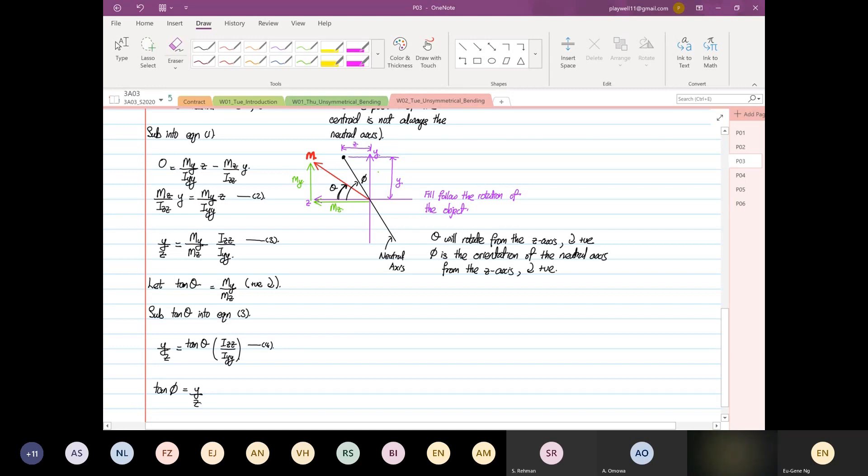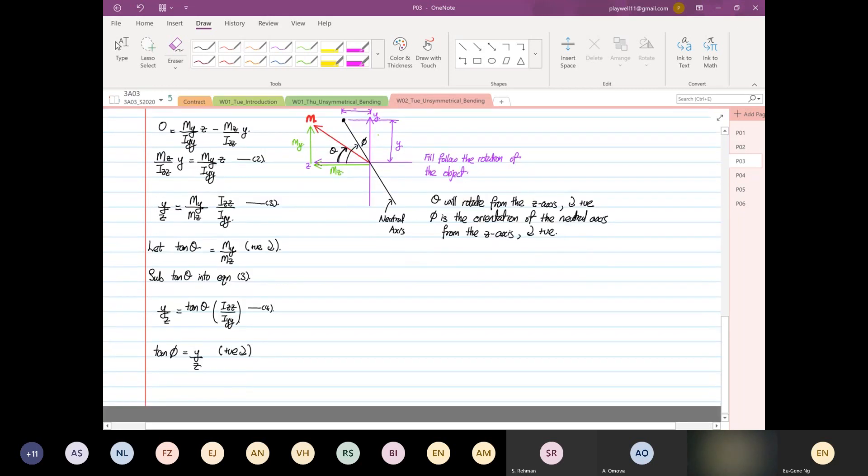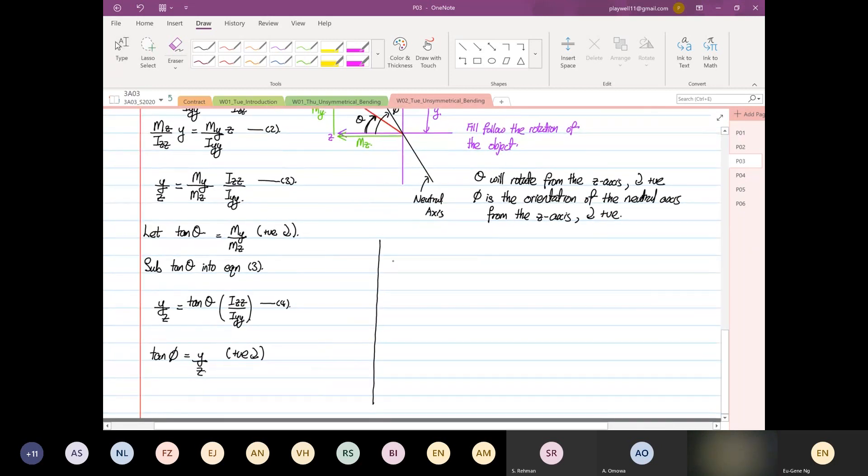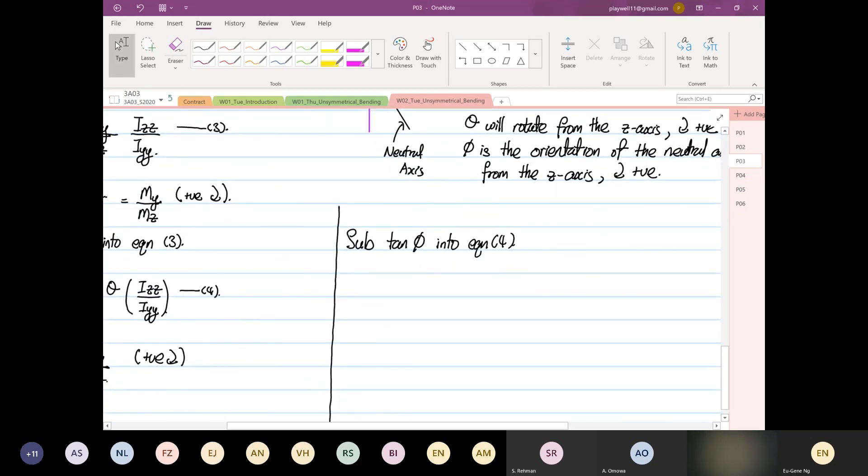And again, I elaborate that positive is going in the clockwise direction. So we're going to substitute, here we're going to substitute, I'm going to carry on writing. So we're going to substitute tangent pi into equation 4.